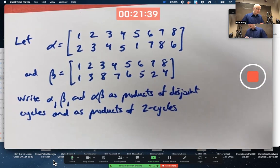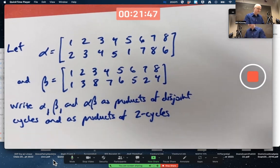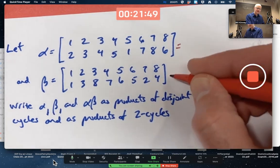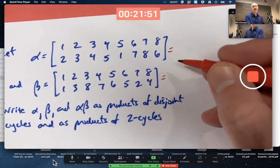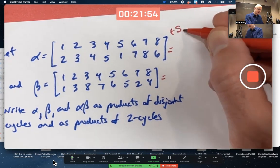In this one, we're writing alpha, beta, and alpha beta as products of disjoint cycles and as products of two cycles. The second task is going to be a little trickier. We've already done the first task, but now these are in S8. These are elements of S8, by the way.